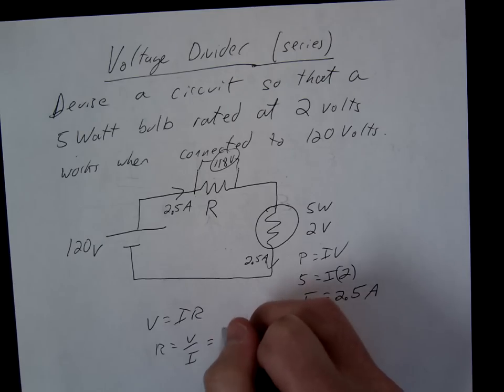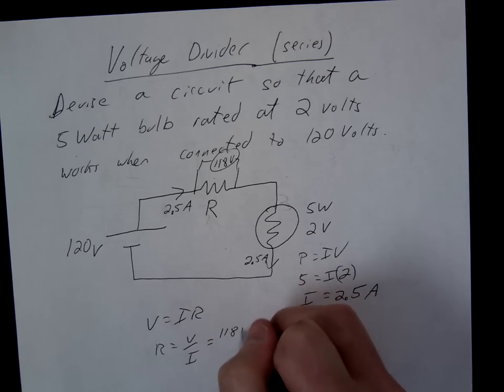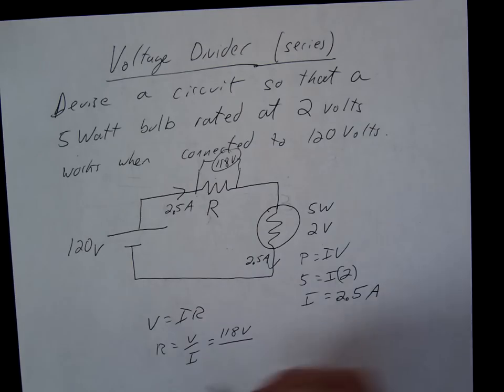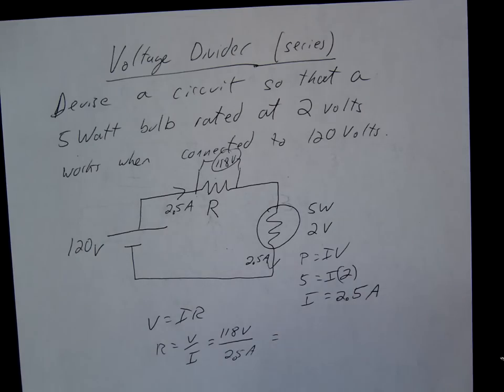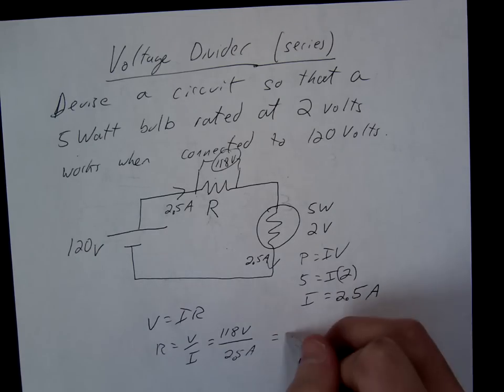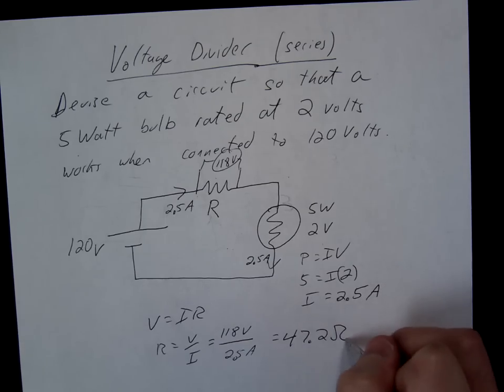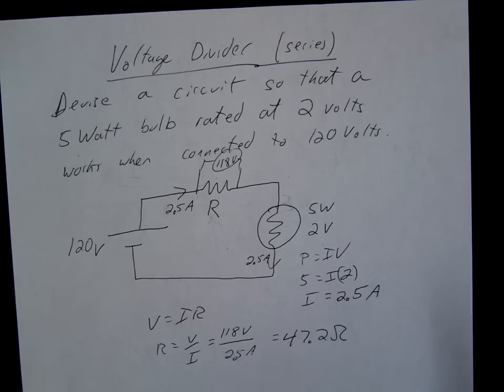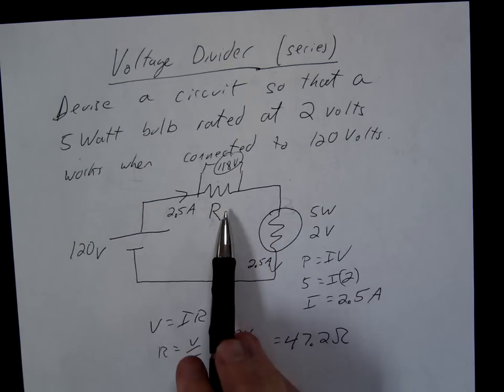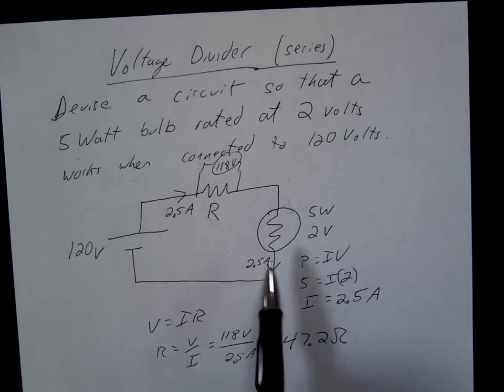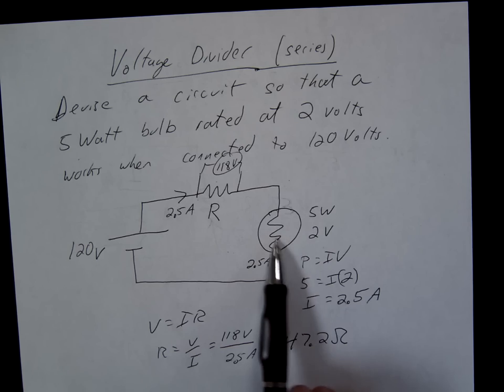So our V, we want this to be 118. We want this to be 2.5. Okay, and what do we get? 47.2. Okay, so if we stick a 47 ohm resistor here, we're going to go ahead and this bulb will work.